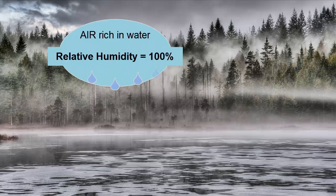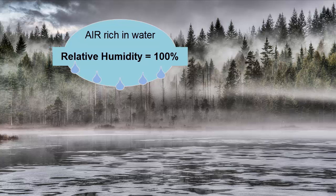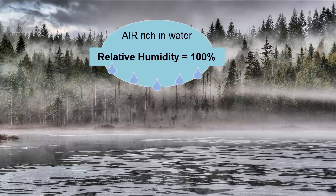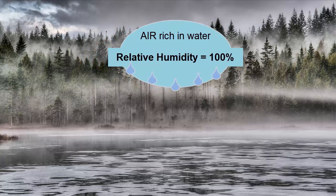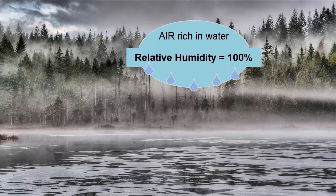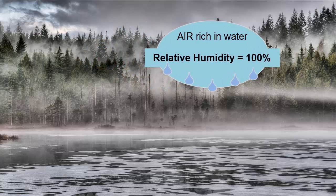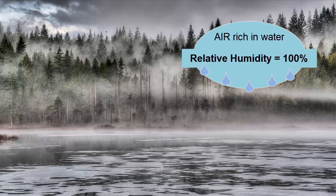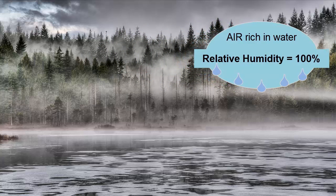When a cloud is moving along the ground, it is called fog. Anyone who has spent much time in San Francisco during the summer has first-hand knowledge of fog and knows that it's made of water droplets, as these cover the windshields of cars and glasses of bicyclists who travel through these fog banks.